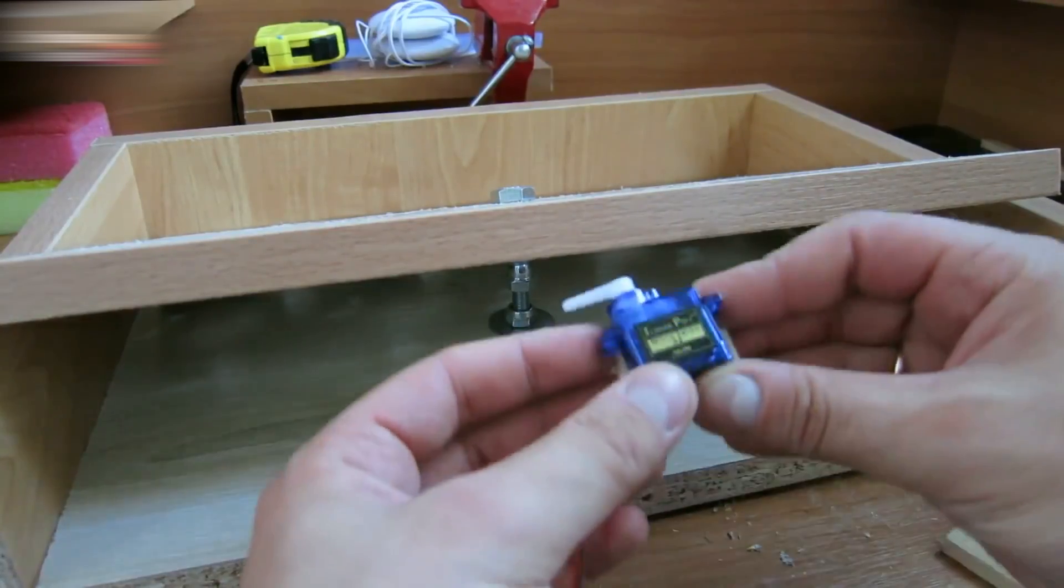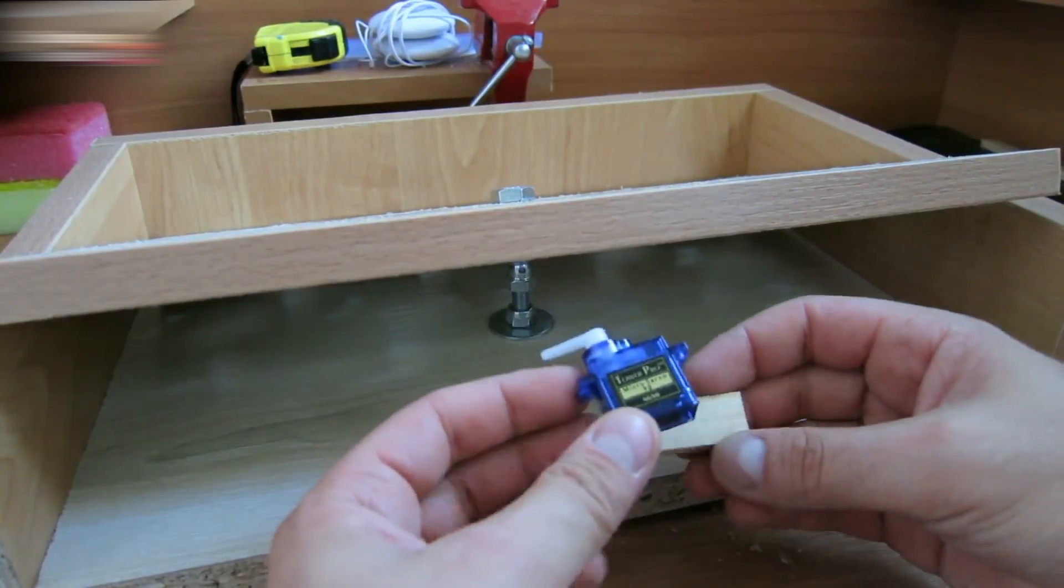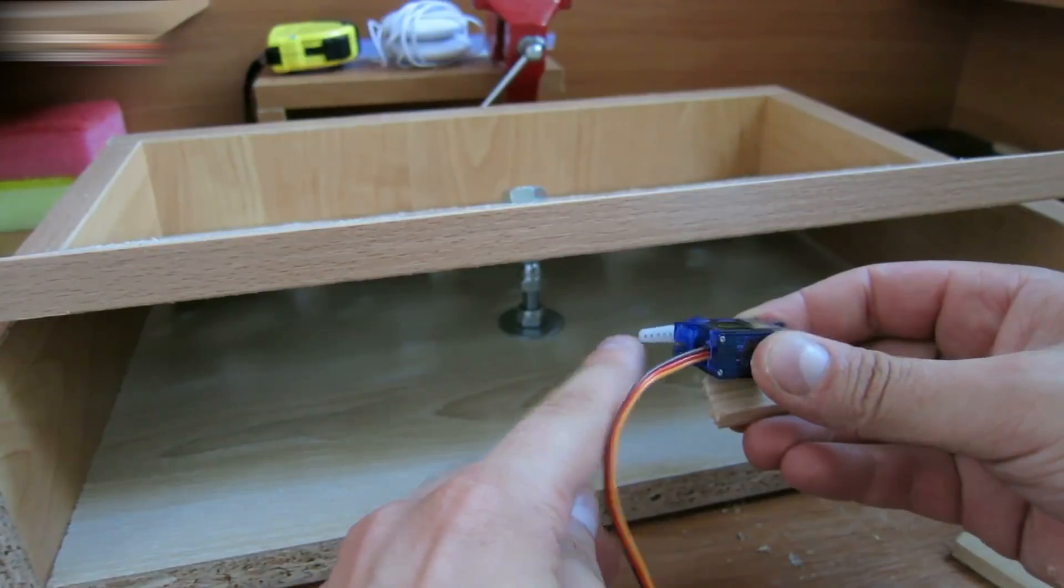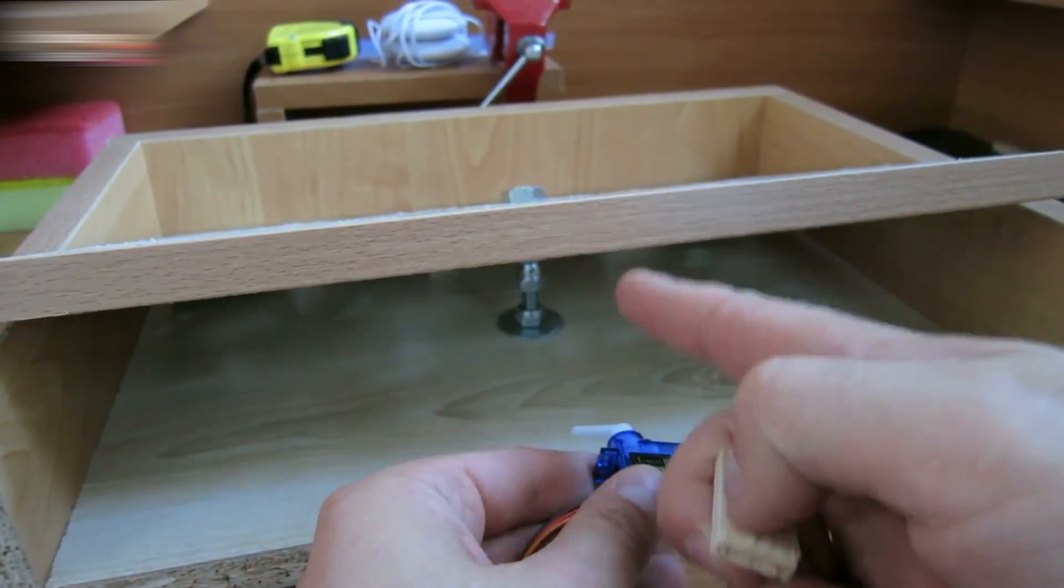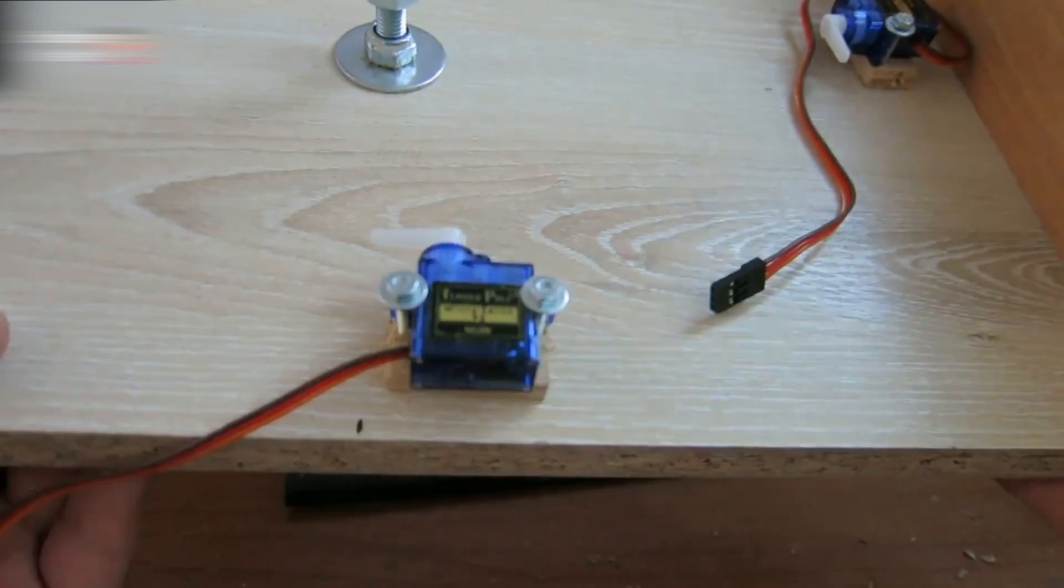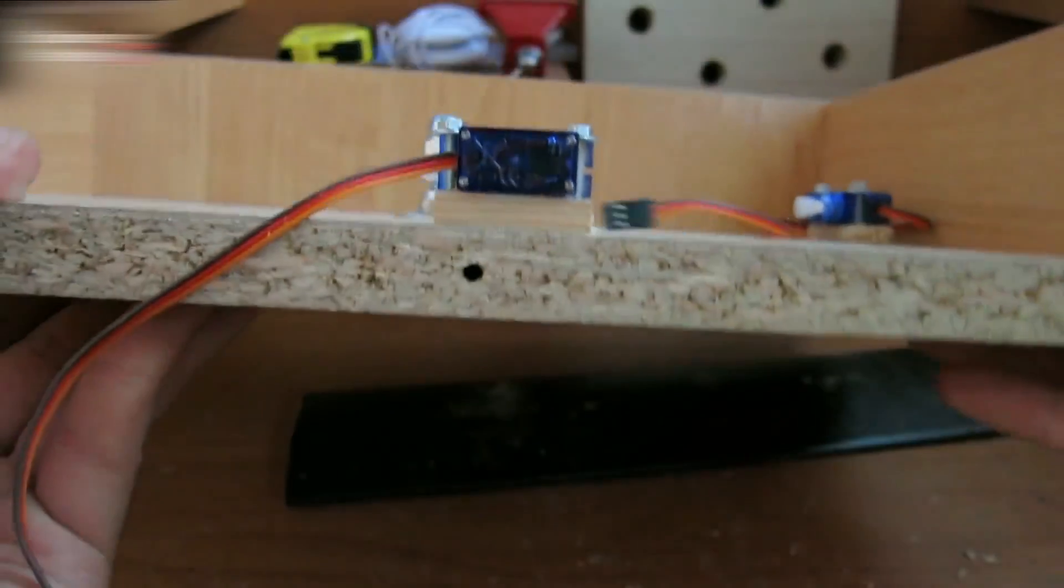Fasten the servo to the bottom. The outer hole of the servo arm should be placed at the center of the board. It should look like this. Each servo should be fastened with two screws.